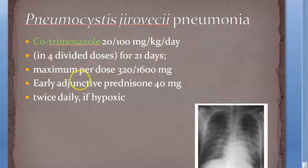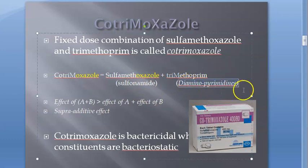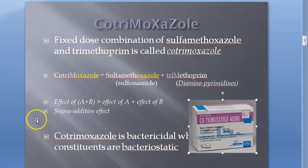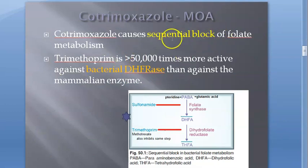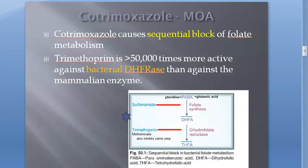Cotrimoxazole is given for 21 days. It is a combination of sulfamethoxazole - which is a sulfonamide - plus trimethoprim, which is a diaminopyrimidine. The ratio is 400 mg of sulfamethoxazole to 80 mg of trimethoprim. While both drugs are individually bacteriostatic, cotrimoxazole together is bactericidal. It causes sequential blockade of folate metabolism - sulfonamide blocks one step, trimethoprim blocks the next.